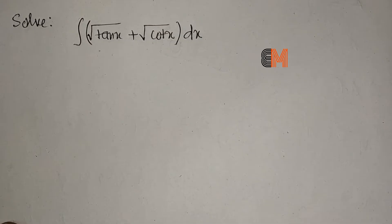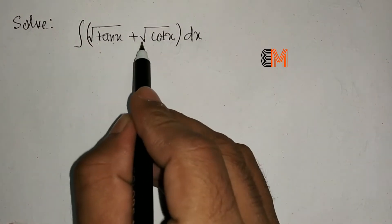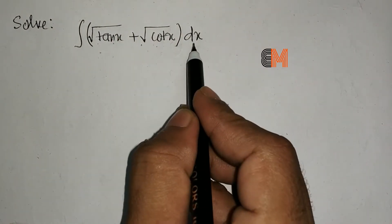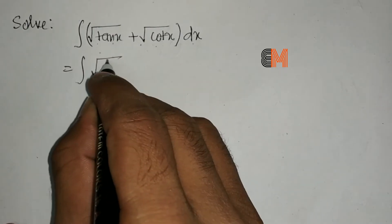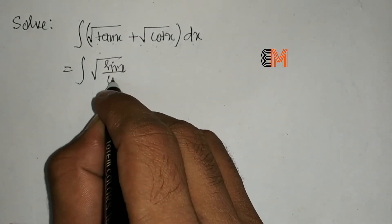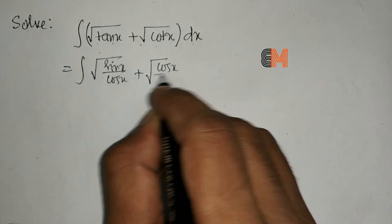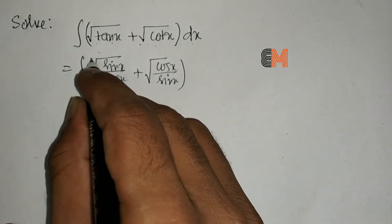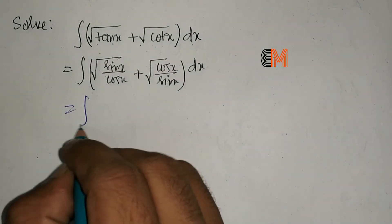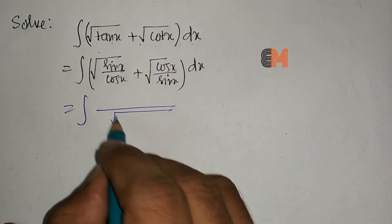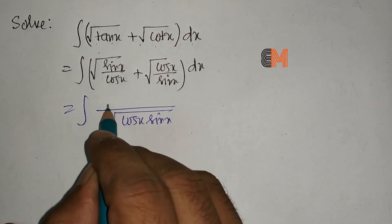Hello students, we are going to integrate √tanx + √cotx dx. We rewrite this as √(sinx/cosx) + √(cosx/sinx), then simplify to the integral of (sinx + cosx)/√(cosx·sinx) dx.